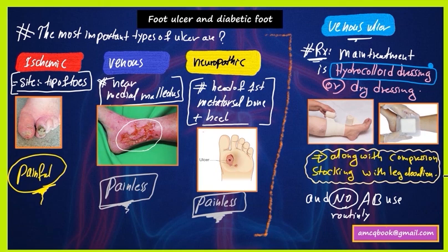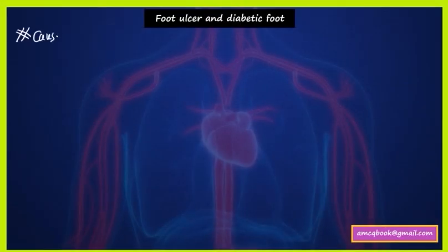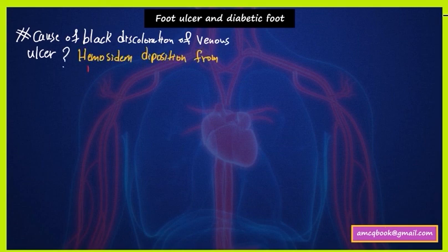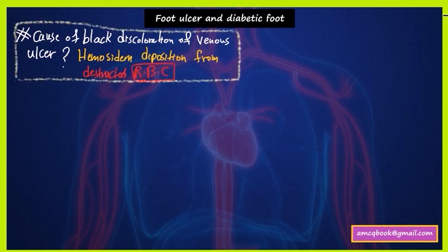What is the cause of black discoloration of venous ulcer? Venous ulcers usually appear black in color. The cause is hemosiderin deposition from destroyed red blood cells in the area.